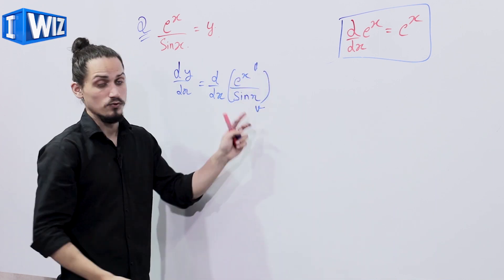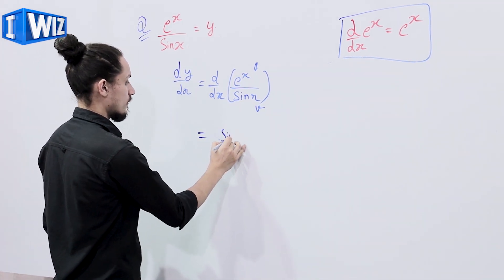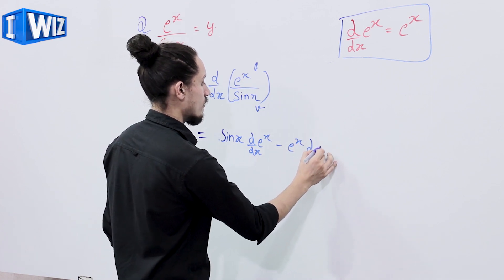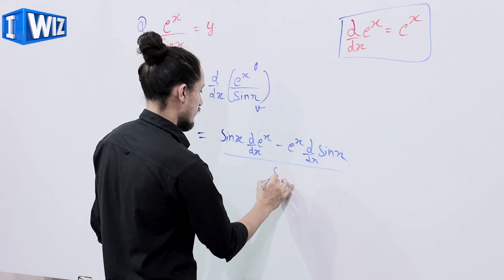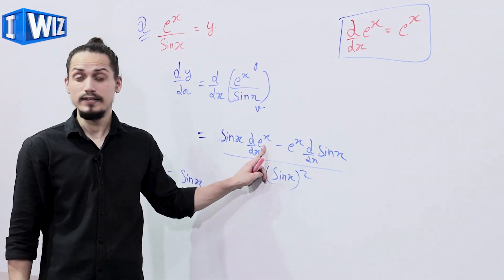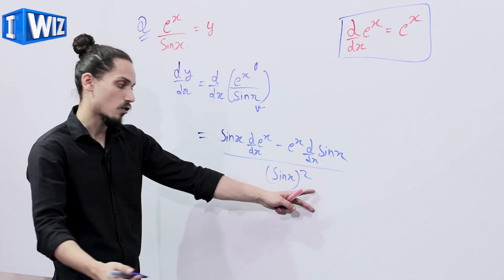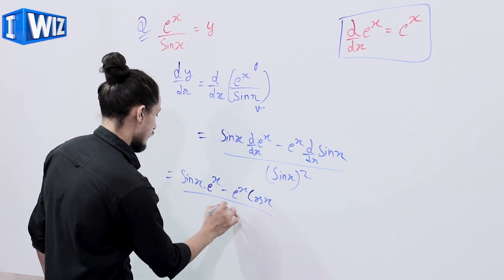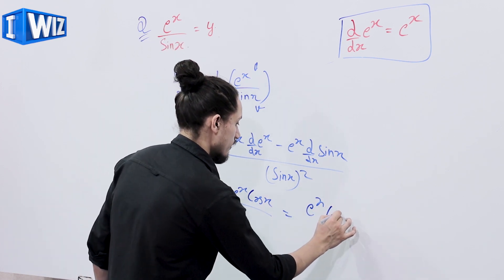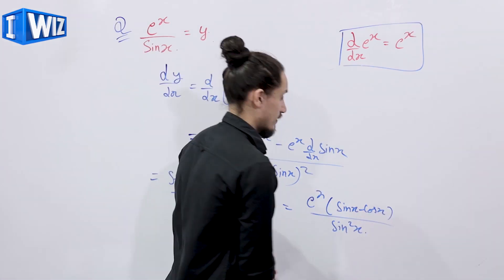This is u and this is v. We'll use the u/v quotient rule, which gives: second function into derivative of first minus first into derivative of second, divided by second function whole square. That equals sin x times e^x minus e^x times cos x, divided by sin squared x. So the result is e^x times (sin x minus cos x) divided by sin squared x.